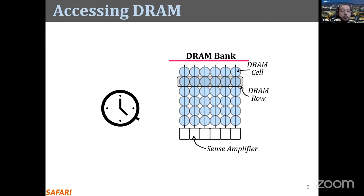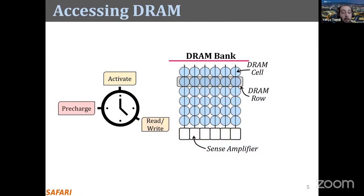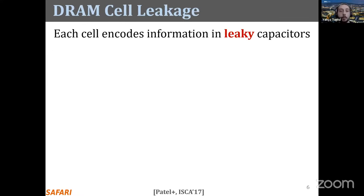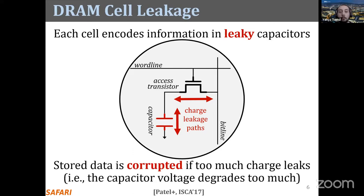The cells are also organized horizontally as DRAM rows. To access a DRAM row, the memory controller first issues an activate command, which loads the DRAM row's data to the sense amplifiers where data can be accessed with read or write commands. After that, the memory controller must issue a precharge command to close the DRAM row so another row can be opened later. Each DRAM cell encodes information in a fundamentally leaky capacitor — the data is stored in the capacitor and the access transistor connects it to the bit line.